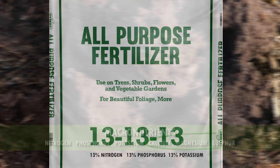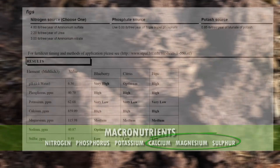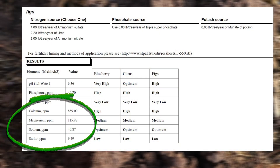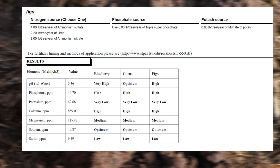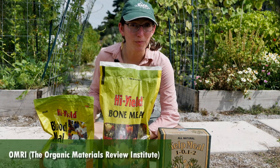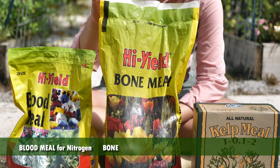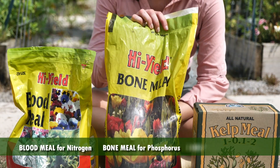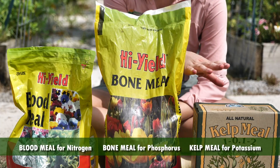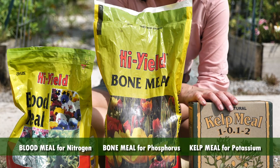The other three macros are calcium, magnesium, and sulfur. They are also included in your test results, just down at the bottom. Your test results will tell you if any of these are low. You can amend with OMRI certified fertilizers like blood meal for nitrogen, bone meal for phosphorus, or kelp meal or green sand for potassium.